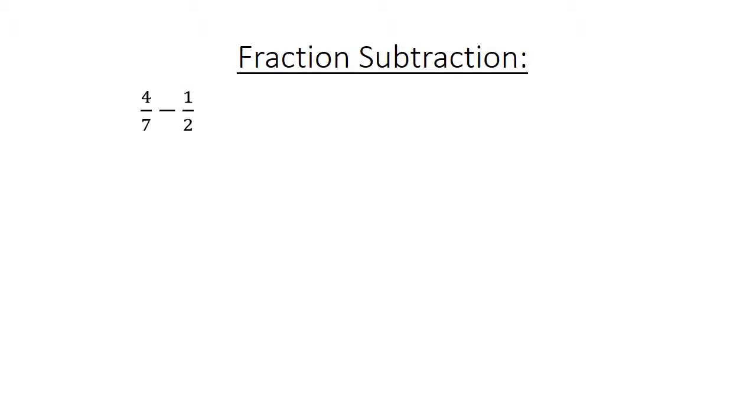Fraction subtraction. 4 over 7 minus 1 over 2. Find the lowest common multiple. 8 over 14 minus 7 over 14 equals 1 over 14.